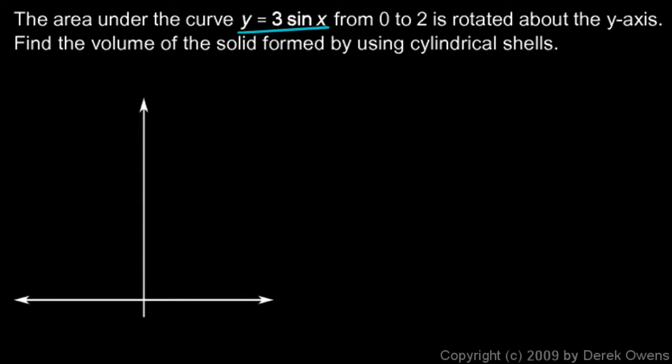The first thing we need to do is graph this curve y equals 3 sine x from 0 to 2. That's x equals 0 to x equals 2. So mark your x-axis off in units up to 2, and you can probably see that the y-axis needs to go up to 3 because this is a sinusoid with an amplitude of 3.